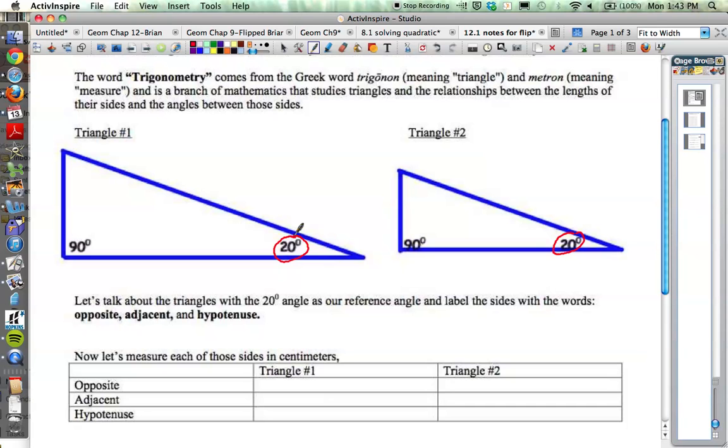In trigonometry, you typically will be referencing one of the non-right angles. So in this case, the 20-degree angle is our reference angle. When we reference that angle, we're going to use three words to label our triangle: the words opposite, adjacent, and hypotenuse. You guys know what the word hypotenuse is, so I'd like you to write the word hypotenuse on each of these triangles. It's the side across from the right angle, as you guys know. Now, putting the other two words in the correct spots is very important. That's why we have a reference angle. So think about this 20-degree angle.